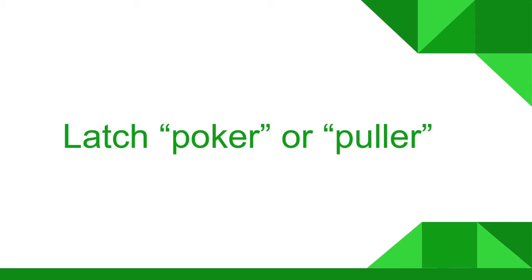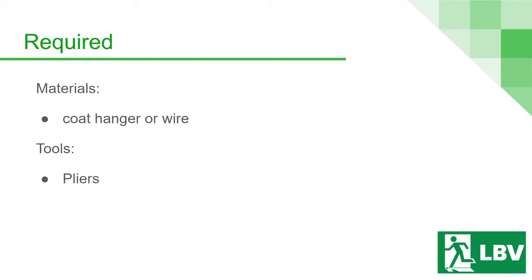First off, we'll be teaching you how to make the latch poker or puller. The materials required for this is a single coat hanger or a piece of wire. You will also need a pair of pliers.